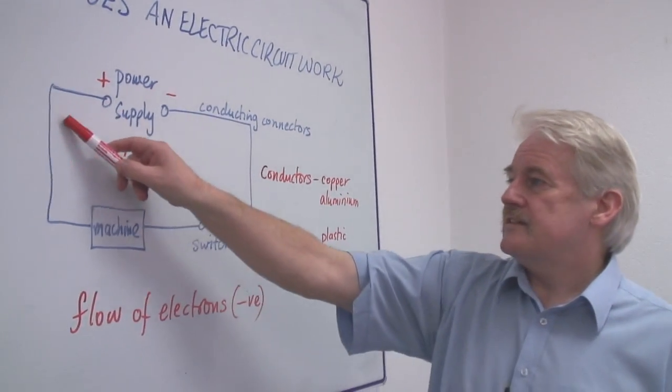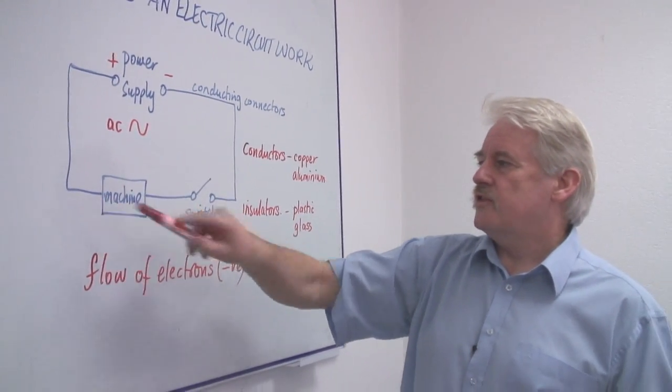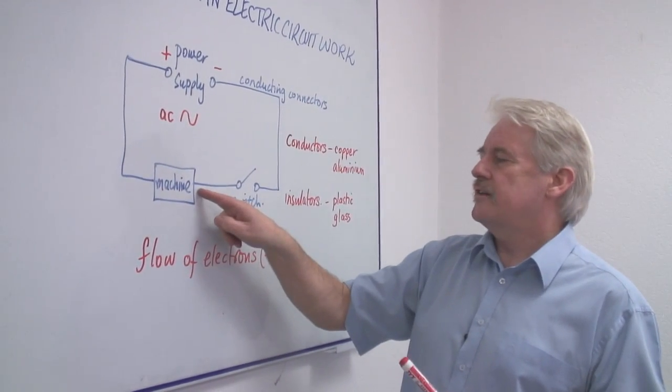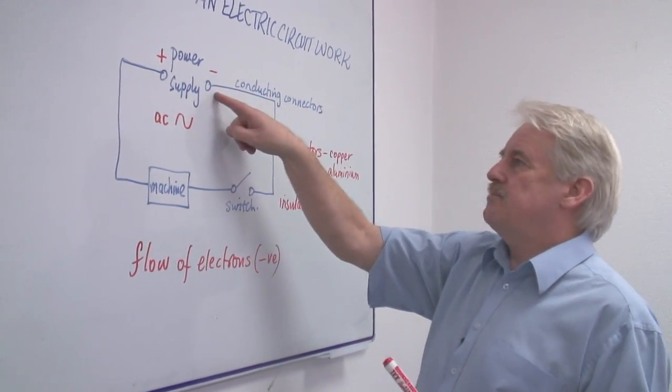The power supply is then connected to one side of the machine. And from the other side of the machine, can go back to the power supply.